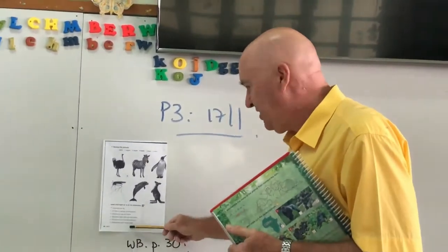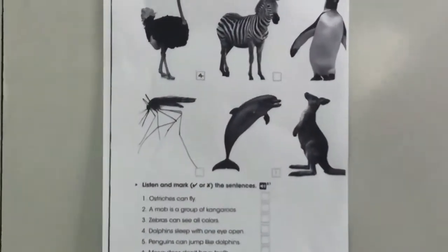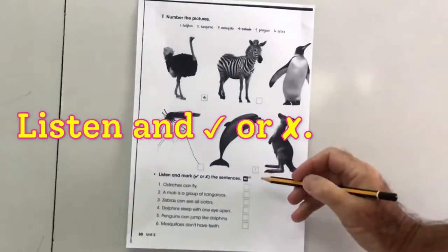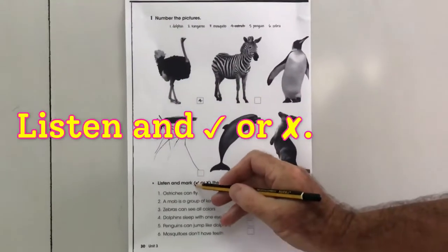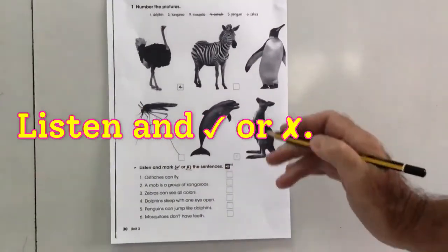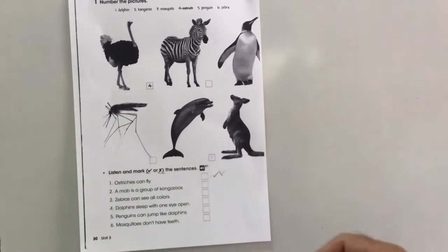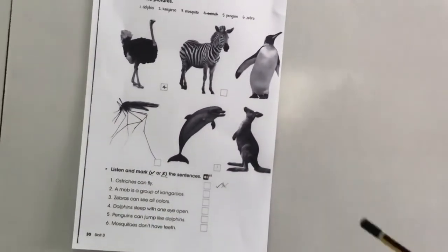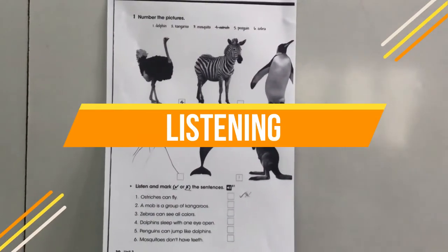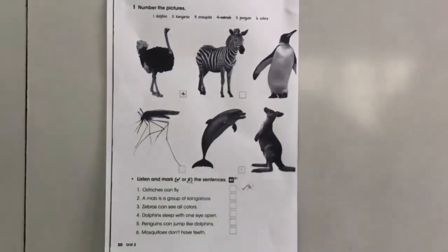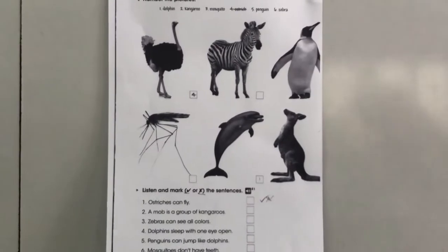At the bottom we have six little sentences — one, two, three, four, five, six — and what I want you to do is listen and say whether the sentence is yes, true, or no, false. So, ostriches can fly: if you think yes, put a tick; no, like that. You've got to listen carefully and put yes or no for all of these six sentences.